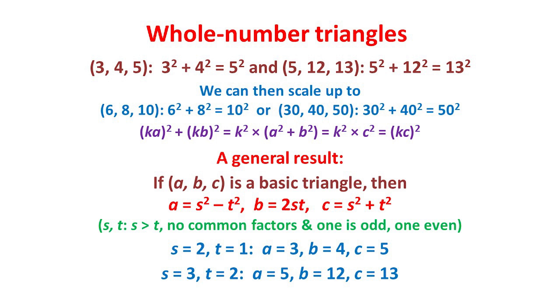For example, if we take s to be 2 and t to be 1, we get a = 2² - 1, which is 3, b = 2 × 2 × 1, which is 4, c = 2² + 1, which is 5, giving us the 3, 4, 5 right-angled triangle.